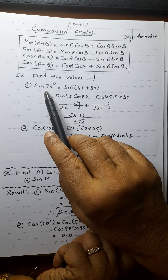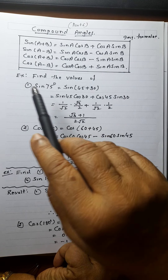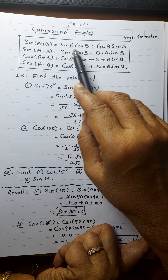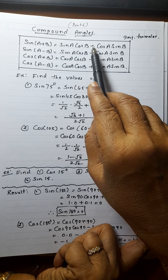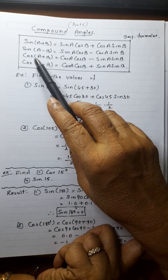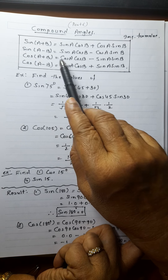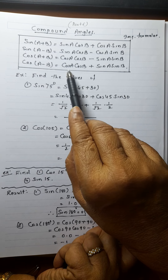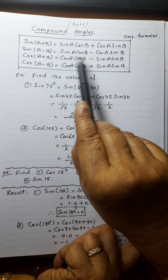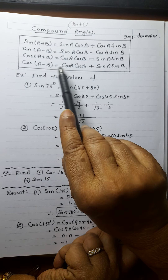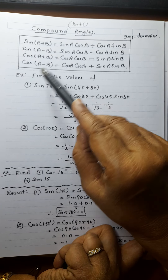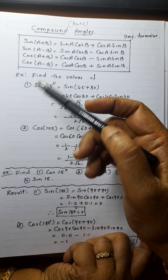Very important formulas. For sin, there is one sin and one cos. For the plus case, the sign here is plus; for the minus case, the sign is minus. But for cos, cos cos and sin sin come together. Remember: for the plus case in cos, the sign here is minus; for the minus case, the sign is plus. Write these formulas many times so that you will remember them.